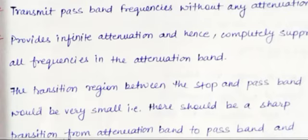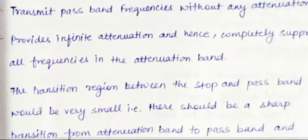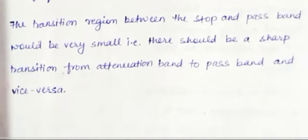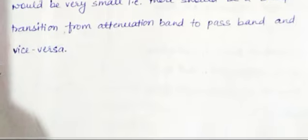Ideal filters should have the following characteristics. Every component and device has an ideal and a practical version, so let's look at ideal filters. An ideal filter should transmit pass band frequencies without any attenuation. It should provide infinite attenuation and hence completely suppress all frequencies in the attenuation band. The transition region between the stop band and pass band should be very small, with a sharp transition from the attenuation band to the pass band.